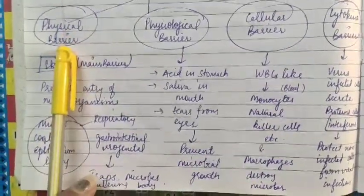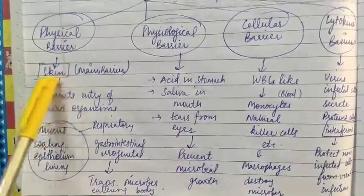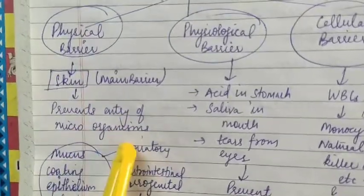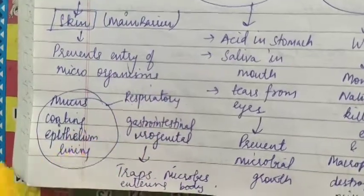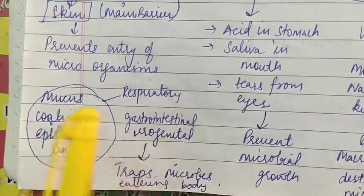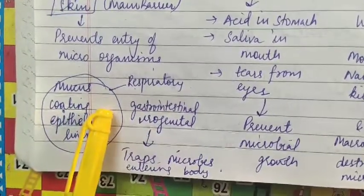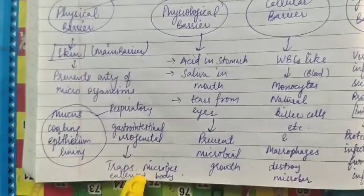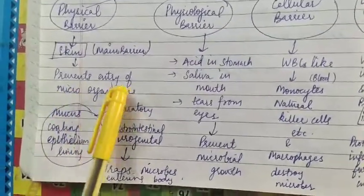The first barrier present in our body from birth is the physical barrier. The main physical barrier is our skin, which prevents the entry of microorganisms. The respiratory tract, gastro-intestinal tract, and urogenital tract have an epithelium with a mucous lining, and this mucous lining traps all microbes and does not allow them to enter our body.